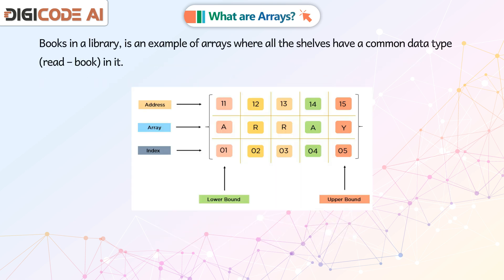Books in a library is an example of arrays, where all the shelves have a common data type, read-book, in it.